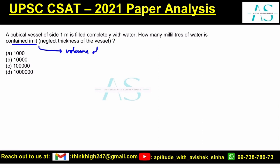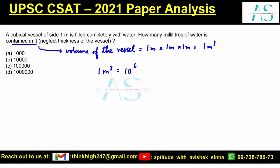What is the volume of the vessel? It is 1 meter × 1 meter × 1 meter, that is 1 cubic meter. We know for a fact that 1 cubic meter contains 10 to the power 6 milliliters.